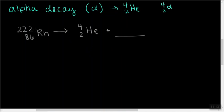Welcome back. So we know that all the masses on the left have to add up to all the masses on the right. So we know that we've already got 4 here, so the answer will be 222 minus 4. So that's going to be 218. That's going to be our top number here.